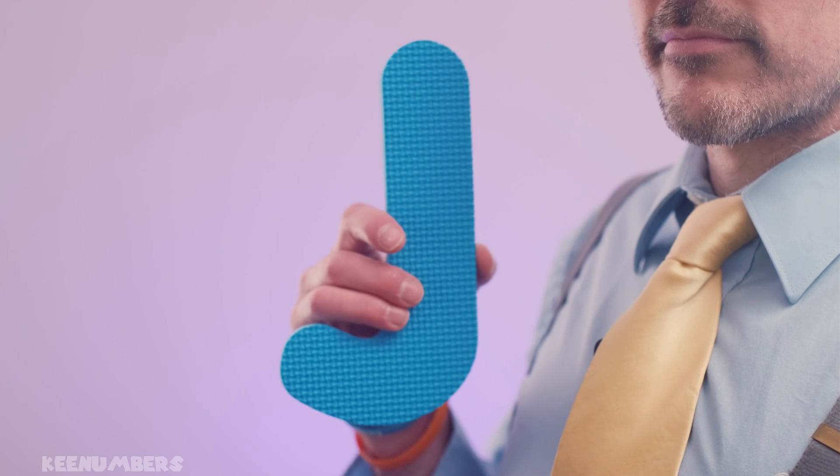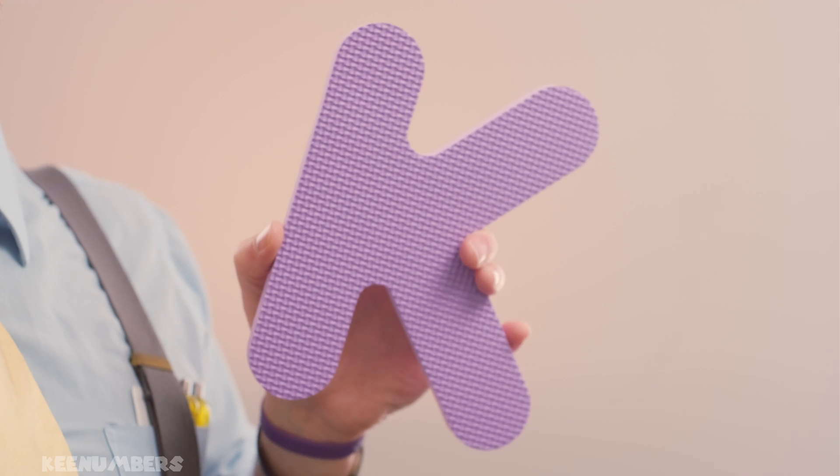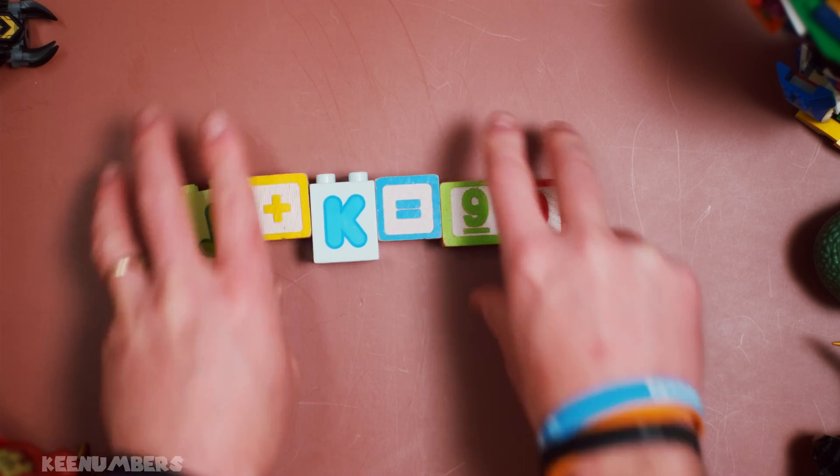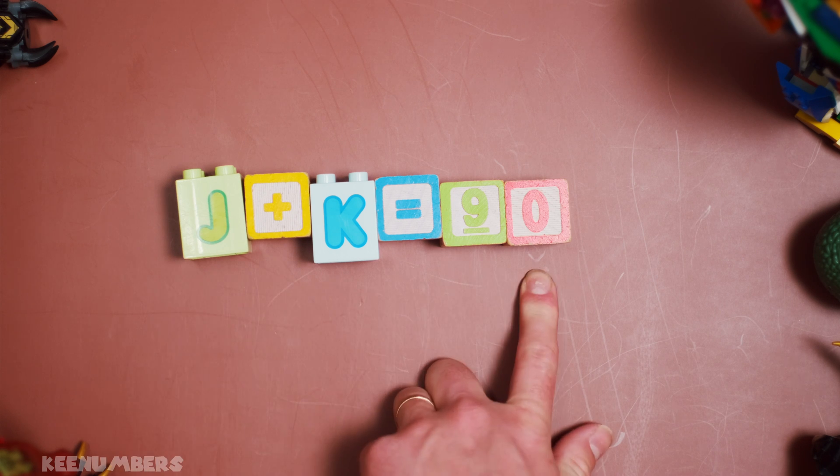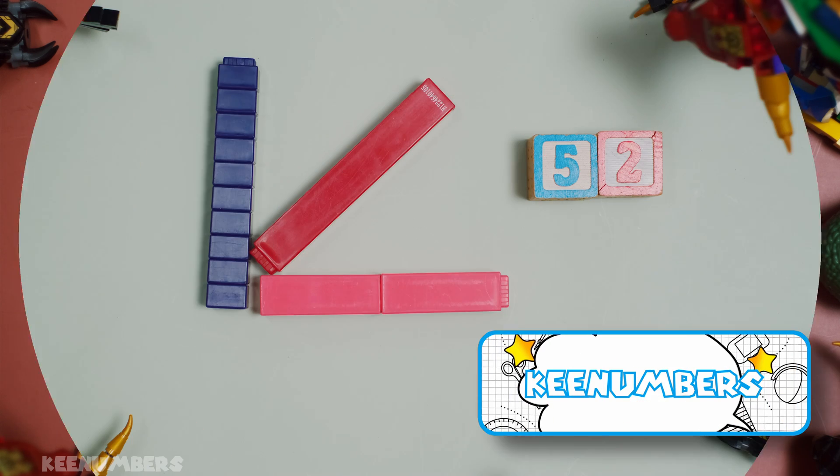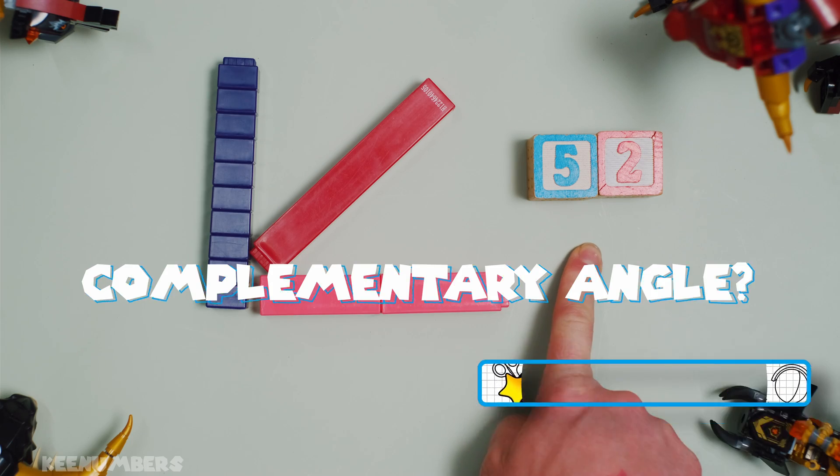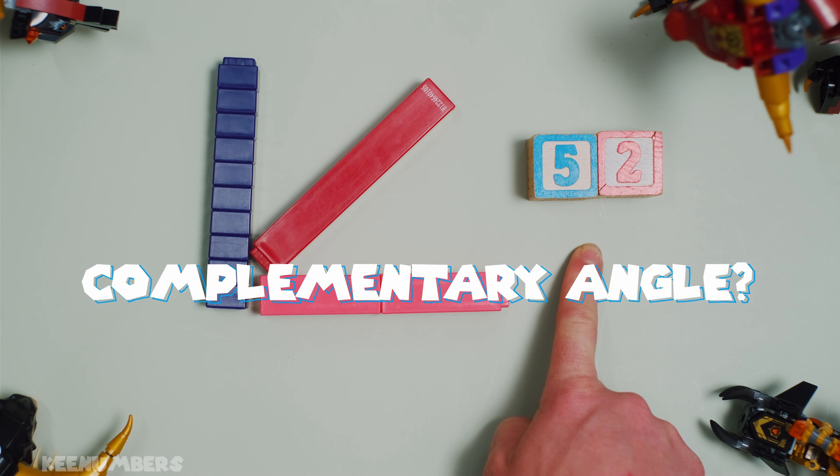Two non-negative angles, we can just call them J and K, are complementary if their sum is 90 degrees. What is the complementary angle of 52 degrees?